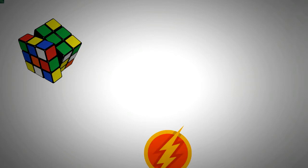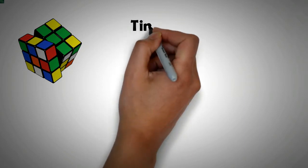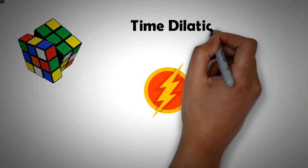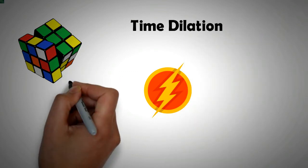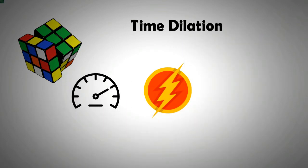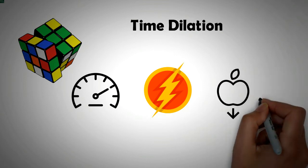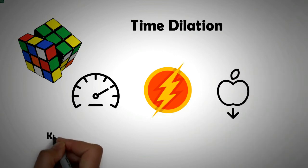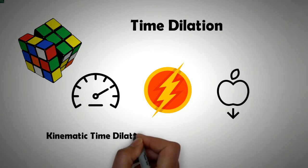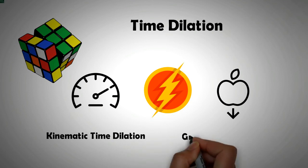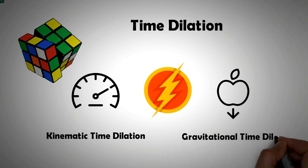Now that we have clarified some of the ambiguity, let's explore further how time can march forward slower or faster with reference to an object. The marching speed of time depends upon two things: first is the velocity of the object, and second is the gravitational force faced by the object. The scientific terms kinematic time dilation and gravitational time dilation are used to describe them respectively.